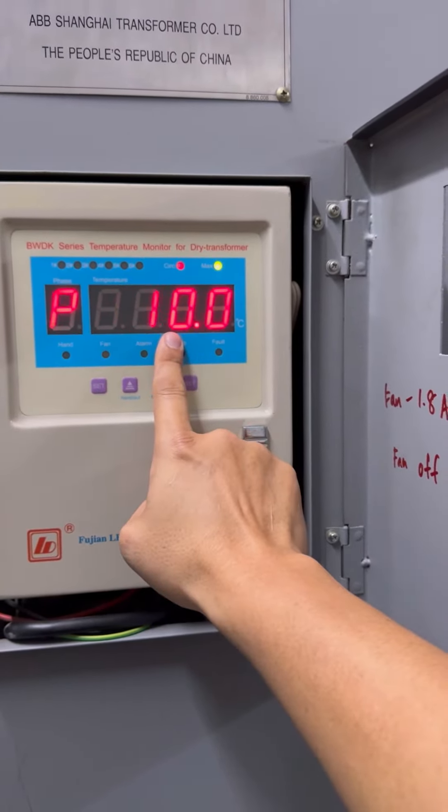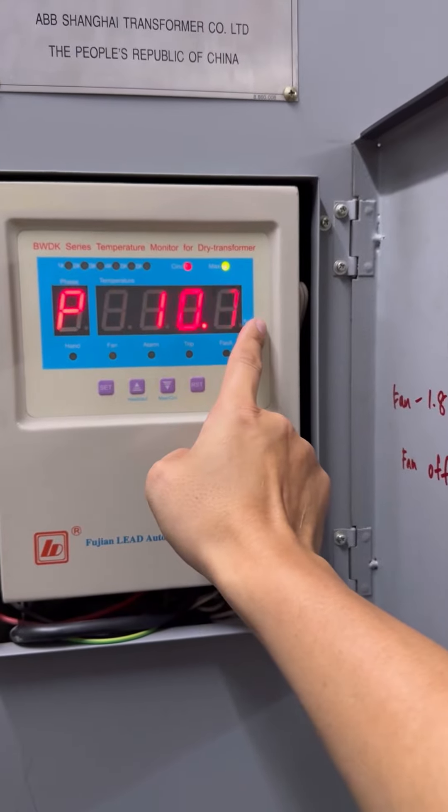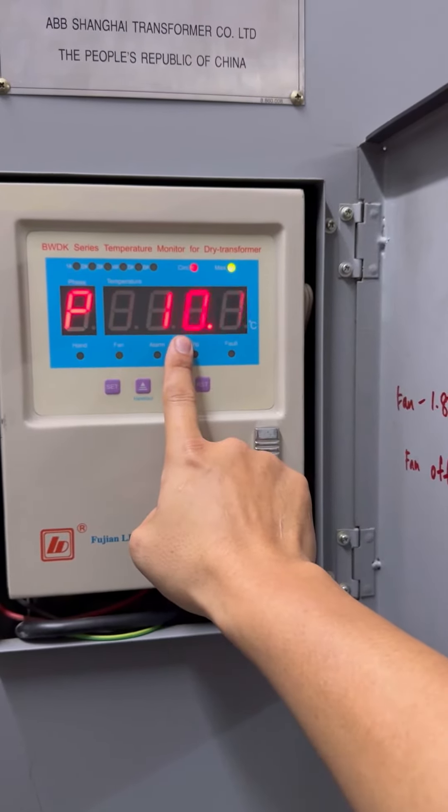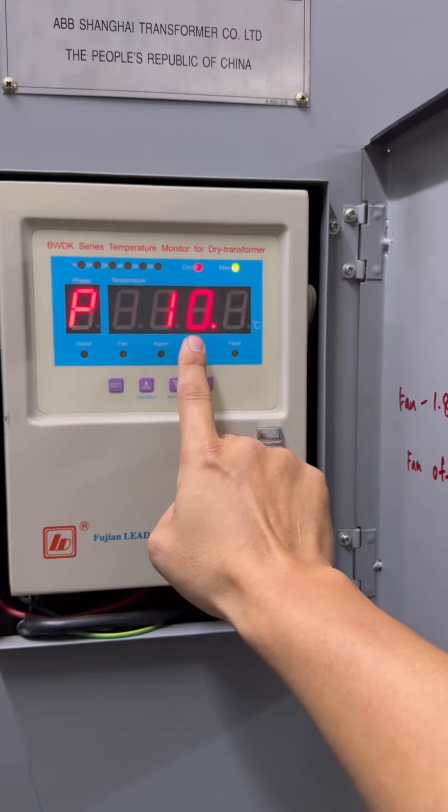Then you press again. This is the difference of temperature - that means 90 degrees Celsius minus 10, which equals 80 degrees Celsius. That means the fan off is 80 degrees Celsius.